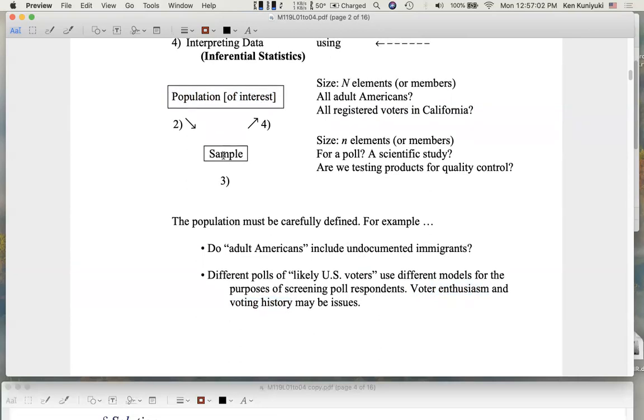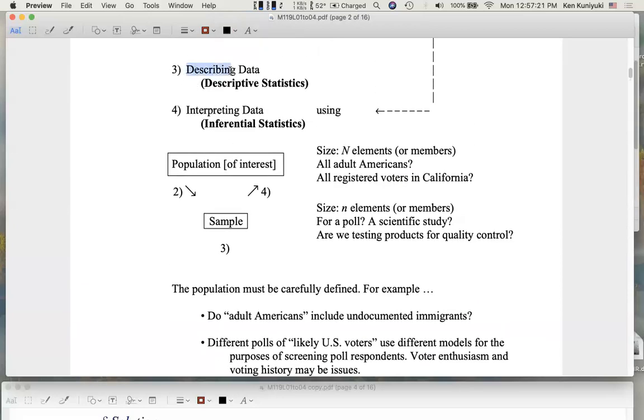So from that population, we might draw a sample, because it would take way too long to ask every registered voter in California what he or she thinks about the election. If we do that, that's called a census. So for practical purposes, we draw a sample. And within the sample, we describe the data. So from the population of tens of millions of Californians, registered voters in California, we draw a random sample of maybe a thousand registered voters in California. And we can describe that data.